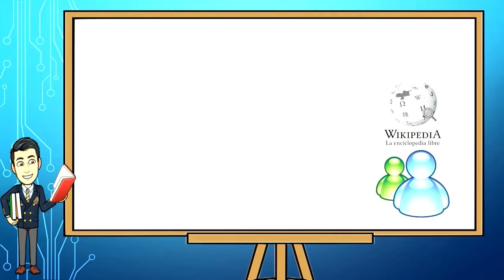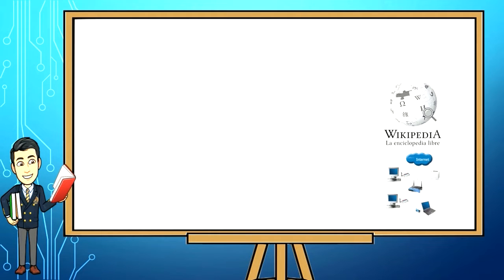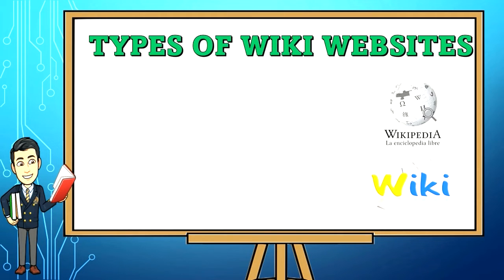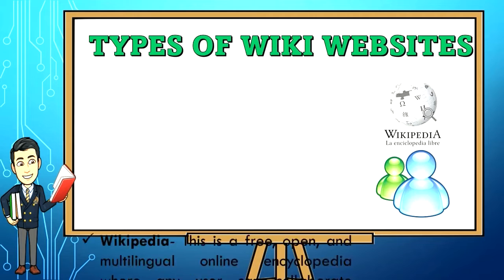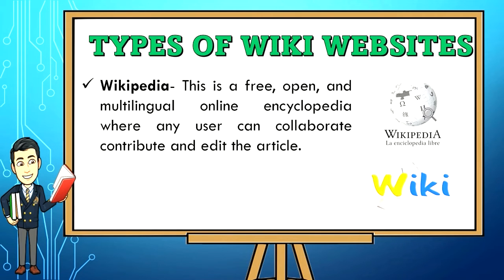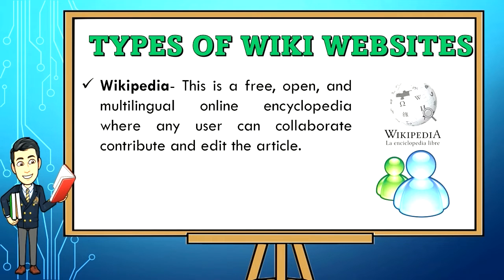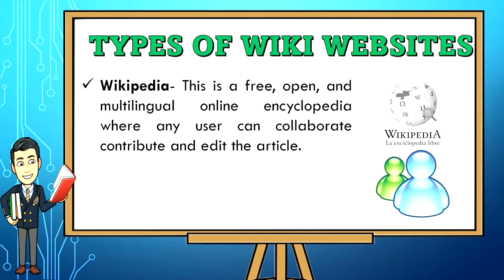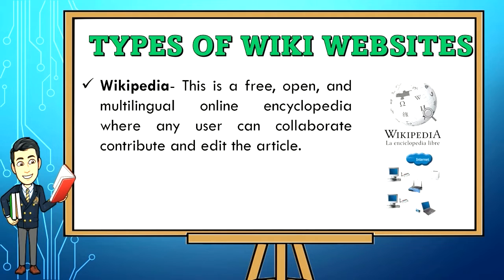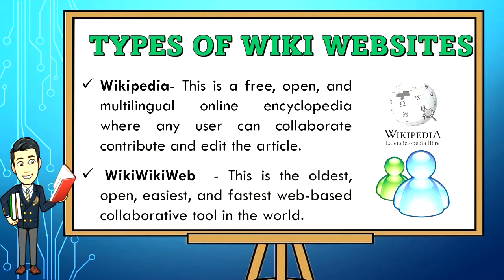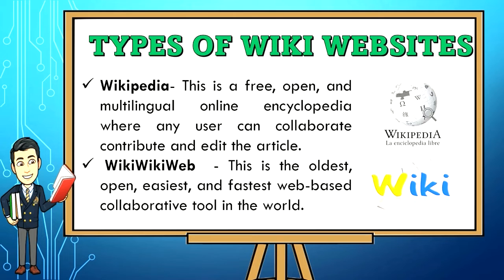These are different types of wiki websites. 1. Wikipedia — This is a free, open, and multilingual online encyclopedia where any user can collaborate, contribute, and edit the article. 2. Wiki Wiki Web — This is the oldest, open, easiest, and fastest web-based collaborative tool in the world.